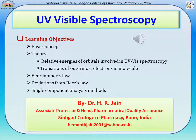This lecture covers the basic concept and theory of UV-Visual Spectroscopy, including the relative energy of orbitals involved, transitions of outermost electrons in the molecule, Beer-Lambert's Law, deviations from Beer's Law, and single component analysis methods.